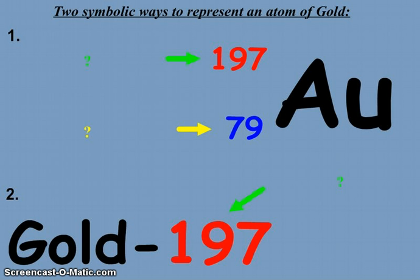Symbolically, we can represent an atom in one of two ways. The first way uses the symbol of the atom from the periodic table. So here we have an atom of gold. Its symbol is AU. You'll notice two numbers, a superscript and a subscript to the left of the symbol.